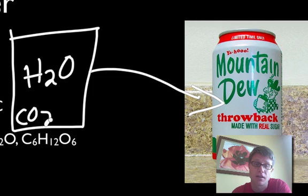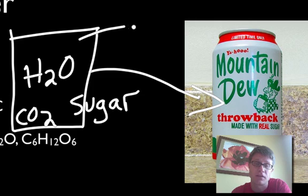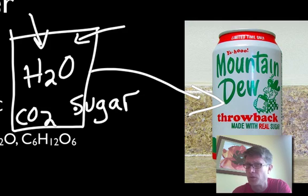Homogeneous mixture means you can't tell apart the different parts inside it. If you look inside Mountain Dew, there's going to be water, carbon dioxide, sugar, caffeine, and yellow dye number five. All those things are mixed together, but you can't tell the different parts, so we call that a homogeneous mixture.